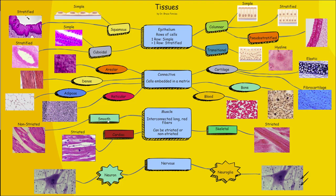Moving on to muscle, we have three types: skeletal, cardiac, and smooth. They're interconnected long red fibers — red because they contain myoglobin, a pigment — and can be striated or non-striated. Skeletal and cardiac are the two striated types. Skeletal consists of long red cells running along the length of a muscle with sarcomeres between the striations. Cardiac muscle is also striated but contains intercalated discs, which help conduct electrical impulses. Smooth muscle is non-striated and less organized, found in the muscular walls of arteries, the digestive tract, and lining organs primarily.